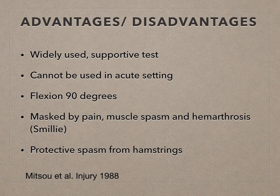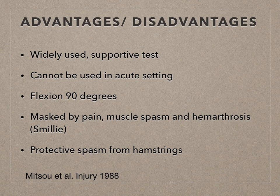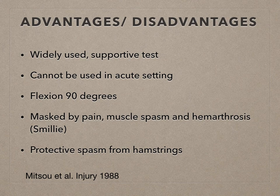What are the advantages and disadvantages of the anterior drawer test? It is widely used, but it is used as a supportive test. The disadvantage is it cannot be used in the acute setting — you have to achieve a flexion of 90 degrees, which is difficult to achieve acutely. Quoting Smiley from Torg's initial paper on ACL tests, he said it was masked by pain, muscle spasm, and hemarthrosis. And there is a protective spasm from the hamstrings.